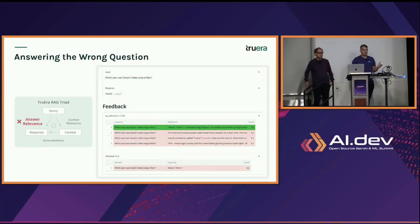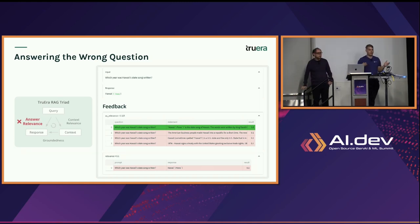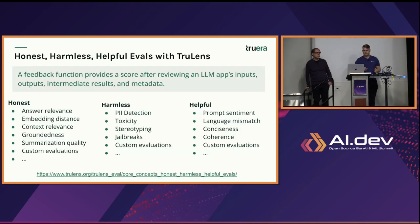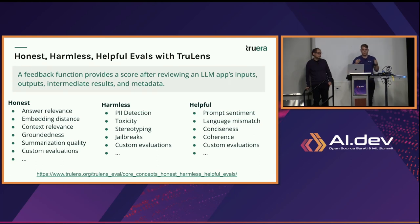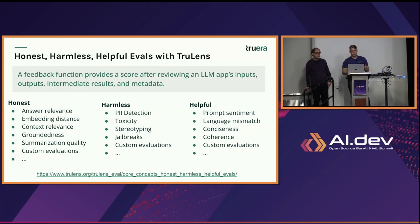And last, sometimes LLMs just answer the wrong question. Here we asked which year was Hawaii's state song written, and it just gave us the name of the song instead of the year. But we're not limited to those evaluations — we can evaluate for honest, harmless, and helpful, all with TrueLens out of the box.